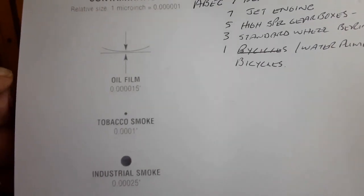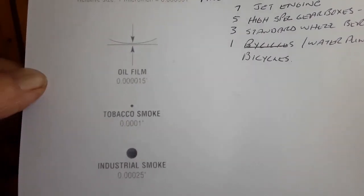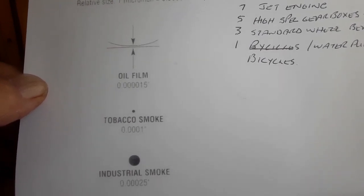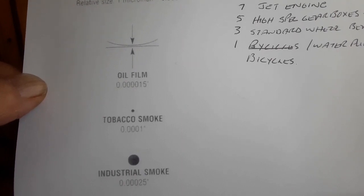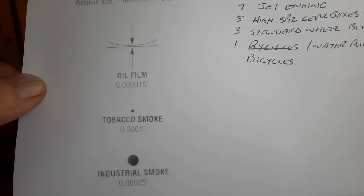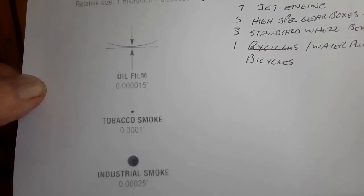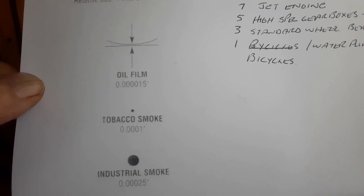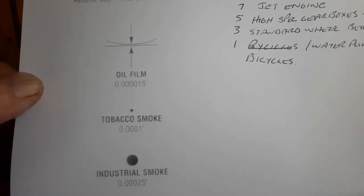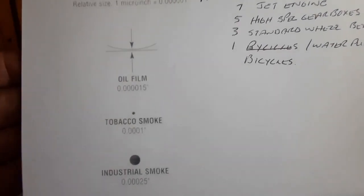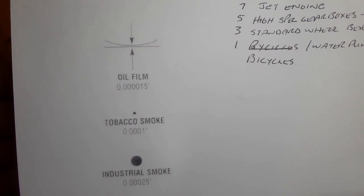I've worked with this extensively, preparing bearings and going through processes to clean them. Even the chemicals you buy are not good enough — even if the container says 99.99% clean. What you do is put the chemical through a distiller, let it cook off, and distill the mist. That distilled product is 100% clean, and that's all you use to clean these bearings.